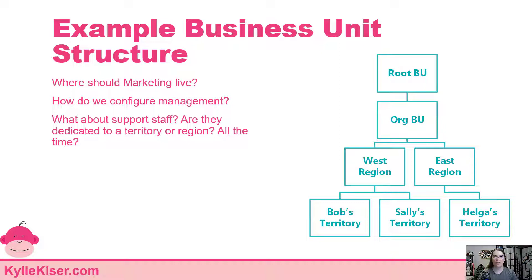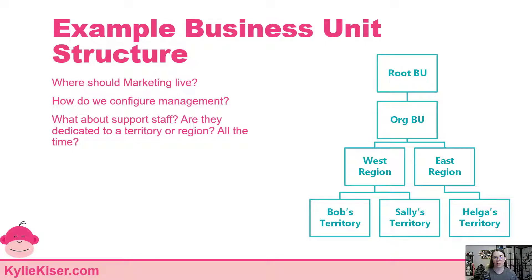Let's look at an example business unit structure. Here's something really simple: we have our root business unit, then our organization, then we have east and west and different sales territories under it — something really standard. But when we look at this, let's think about a few things. Where does marketing live? Does it make sense for marketing to be at the organization level? Do they work with all groups? And what about management — should they have access to the whole organization or only specific territories?